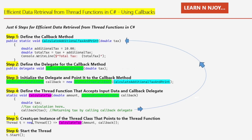Step 5: Create an instance of the Thread class pointing to the thread function. We instantiate the Thread class and specify the thread function along with the input data and callback delegate: 'Thread t = new Thread(CalculateTax(amount, callback))'. Finally, Step 6: we kick start the thread to initiate the asynchronous operation using 't.Start()'.